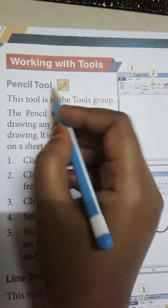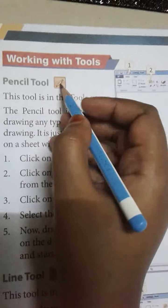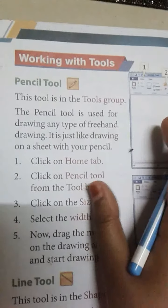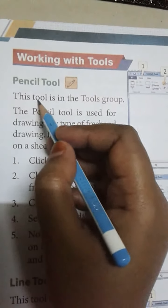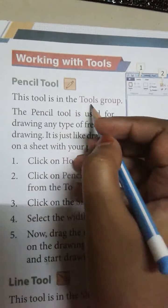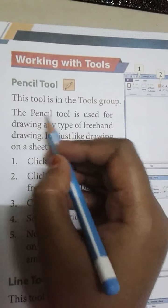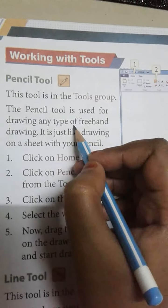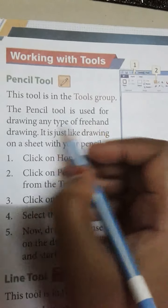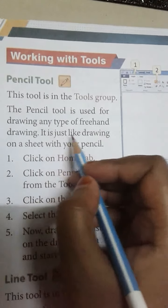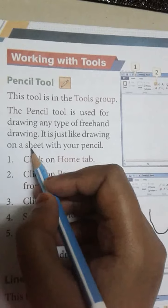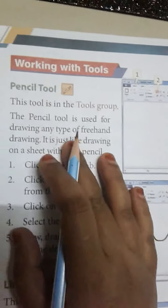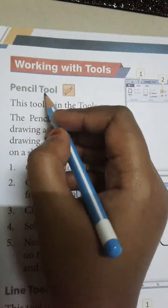First is the Pencil tool. This tool is in the tool group. The pencil tool is used for freehand drawing — drawing any type of shape. It is just like drawing on a sheet with your pencil. Where is the pencil tool? It is in the tool group.